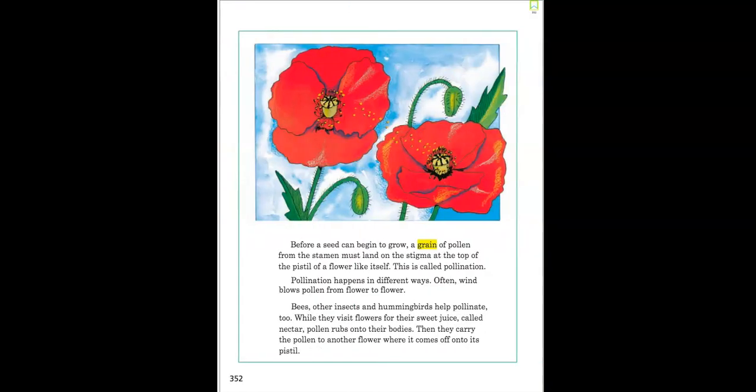Before a seed can begin to grow, a grain of pollen from the stamen must land on the stigma at the top of the pistil of a flower like itself. This is called pollination.